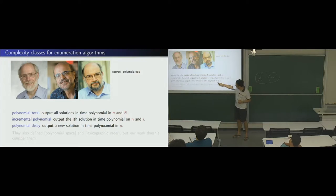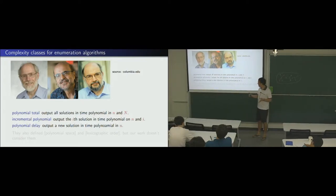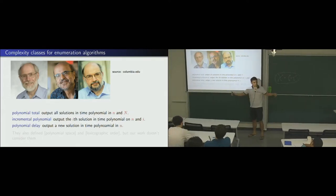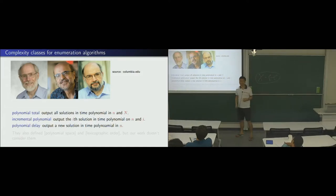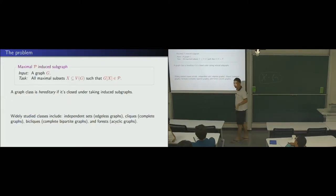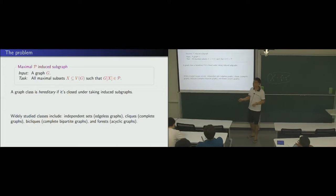And the last one is the best, somehow. So, for each solution, it's only polynomial time. And so, the total is just linear on big N and polynomial on n. So, that's the best case. We also define something, but that's below that. So, the problem we are going to study is to enumerate maximum induced subgraphs. Okay? For some particular hereditary graph class P.